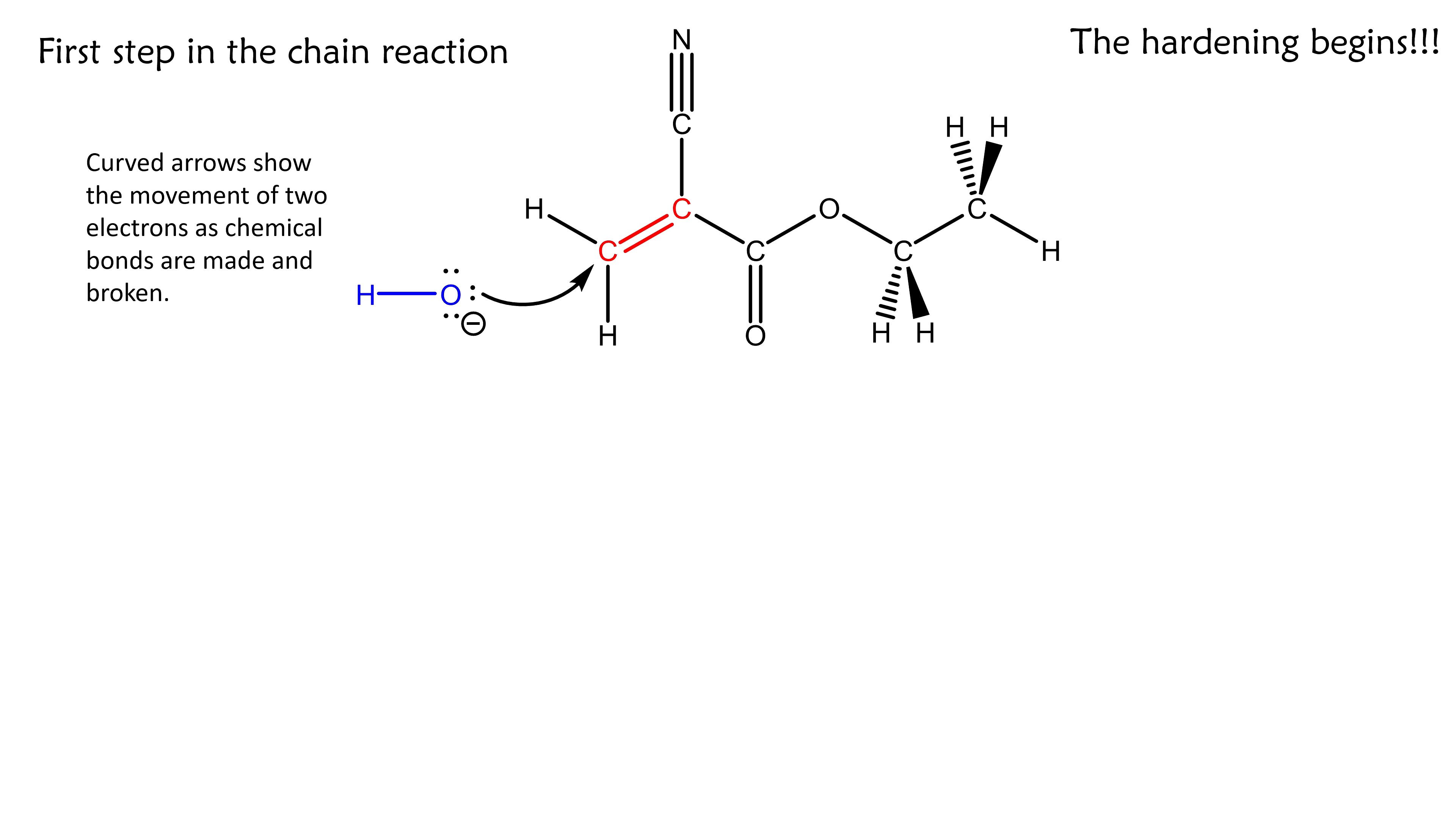Somewhere, you've heard that a covalent bond is simply a pair of electrons shared between two atoms. As this new bond is made between oxygen and carbon, one of the two bonds between the two carbon atoms is broken. This is because carbon never makes more than four bonds.